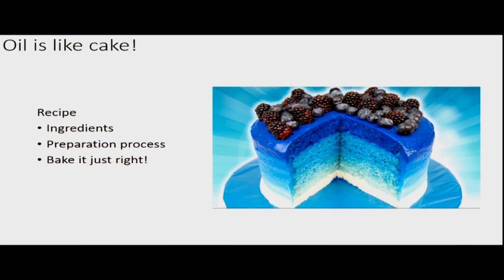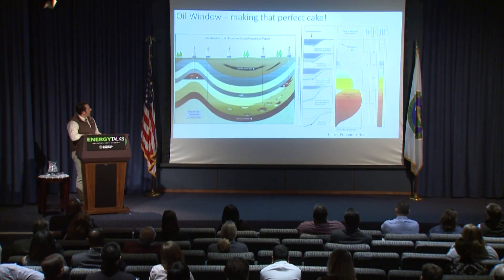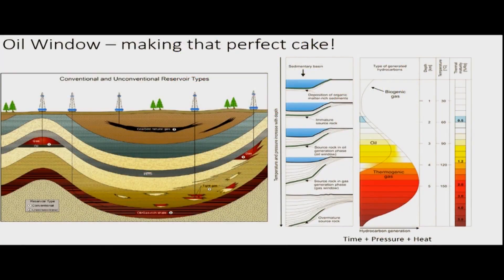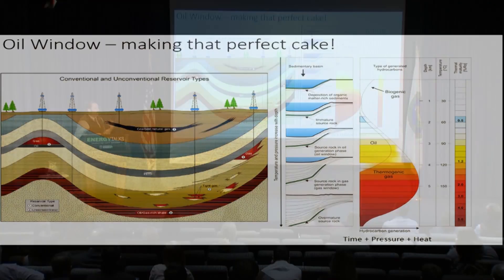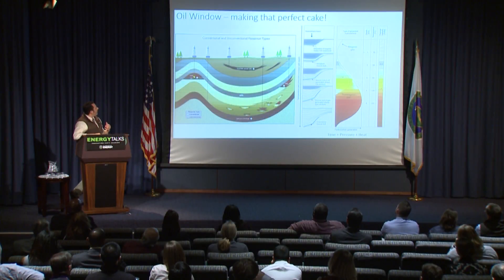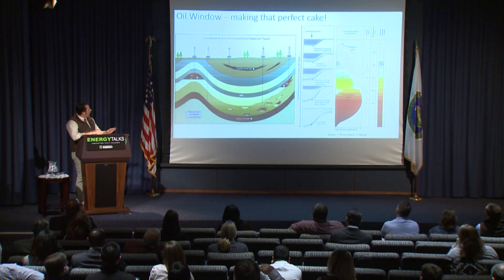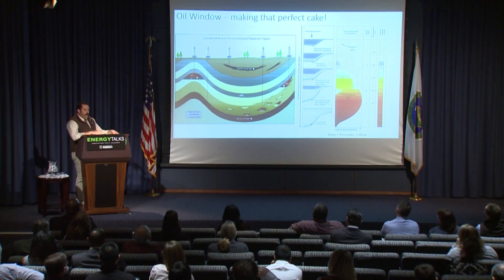Oil is like a cake in that sense — we've got ingredients, a process to combine them, and we have to cook them just right. We've introduced the terms conventional and unconventional. Michael introduced the term 'sweet spot.' Conventional oils were a sweet spot play where there were fewer areas where oil and gas had over time migrated. With respect to oil and gas, you need a seal — an impermeable layer to trap everything — and you need a source, that organic material we talked about.